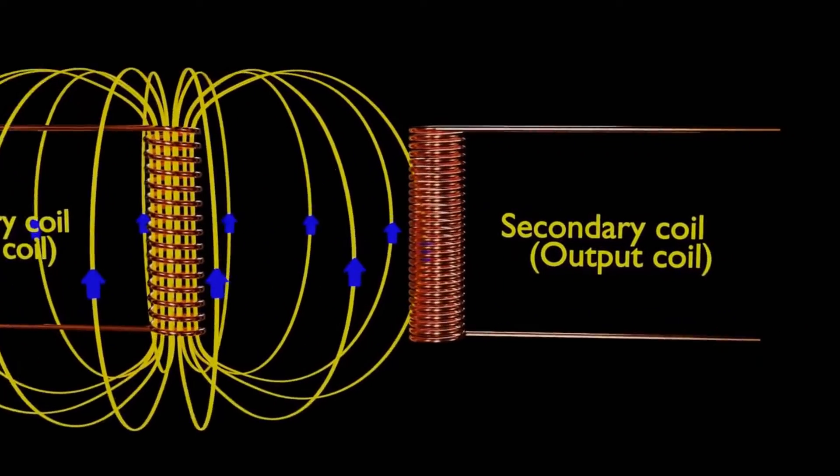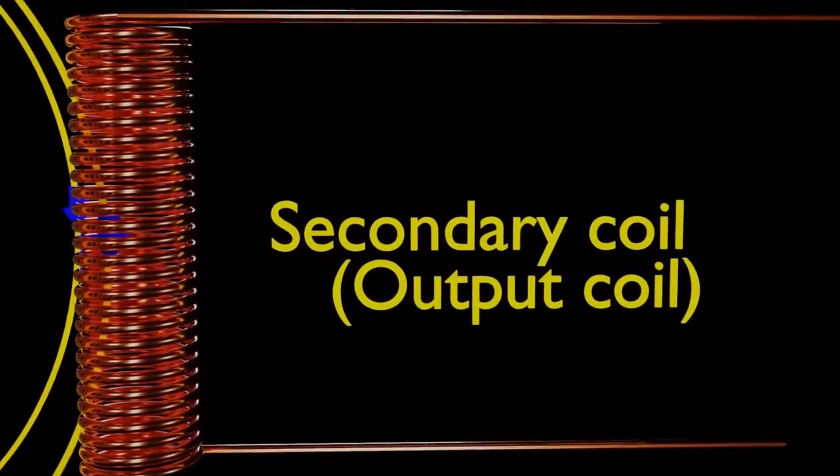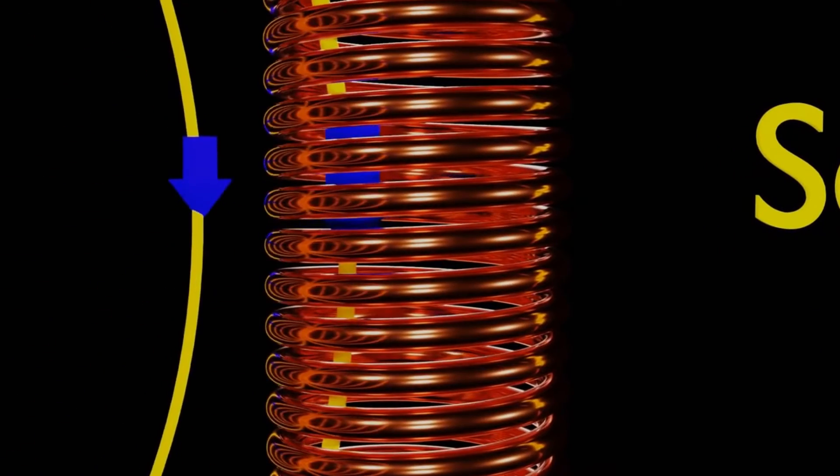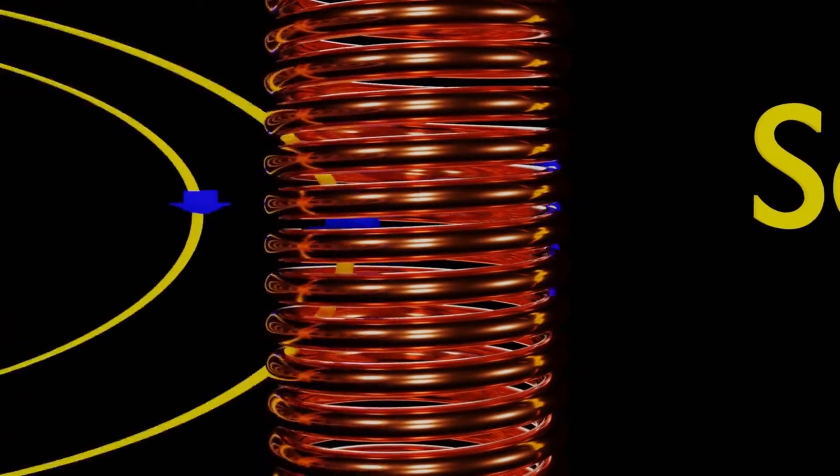However, not all this flux successfully links the primary and secondary windings. Some of it leaks away. This leakage is represented by what we call leakage reactance in the transformer.